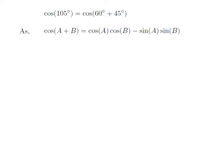We know the expansion of cosine of A plus B is equal to cosine of A into cosine of B minus sine of A into sine of B.